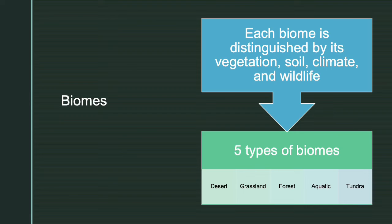There are many types of biomes, each distinguished by its vegetation, soil, climate, and wildlife. Desert, grassland, forest, aquatic, and tundra are the five major types of biomes, though some can be further divided into classes such as temperate rainforest, freshwater, tropical rainforest, marine, savanna, and taiga. Marine and freshwater make up the aquatic biomes. A grassland is a region dominated by grass with a warm, dry climate. One-third of our planet is covered with forests, and the three most significant forest subcategories are temperate, tropical, and taiga. The desert is a dry region with less than 50 centimeters of rainfall per year covering approximately 20 percent of the planet's surface. Lastly, the tundra biome has the coldest climate and low precipitation, with the arctic and alpine as its two main subcategories.